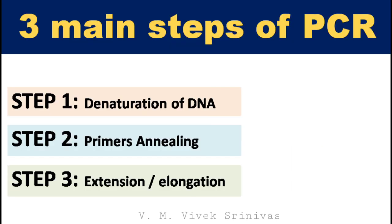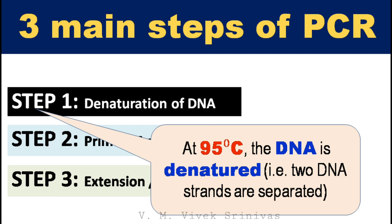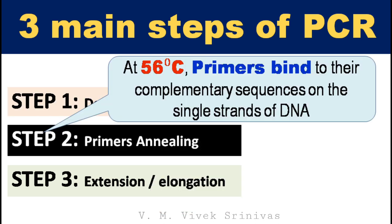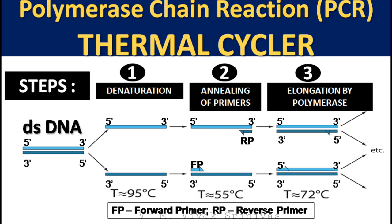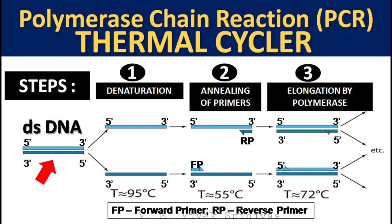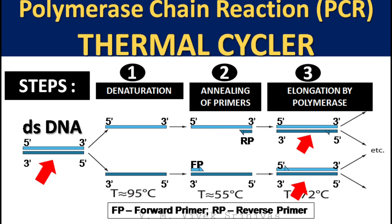Here is an overview of the three steps in PCR. First: at 95 degrees Celsius, the two strands are separated. Second: at 56 degrees Celsius, the two specific primers bind to their complementary sequences on the single strands of DNA. Third: at 72 degrees Celsius, in the presence of dNTPs and Taq DNA polymerase, the bound primers elongate. By using these three steps, a single copy of double-stranded DNA is converted into two copies of double-stranded DNA.